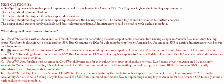B. Use Amazon SWF with an Amazon CloudWatch Events rule for scheduling the start/stop of backup activity. Run backup scripts on Amazon EC2 in an auto-scaling group. Use auto-scaling lifecycle hooks and the SSM Run Command on EC2 for uploading backup logs to Amazon Redshift. Use CloudWatch Alarms to notify administrators with backup activity metadata.